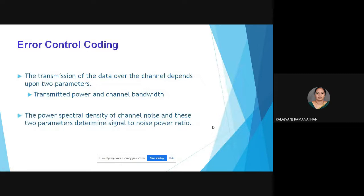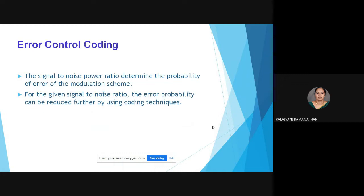Error control coding. The transmission of data over the channel depends upon two parameters: transmitted power and the channel bandwidth. The power spectral density of channel noise and these two parameters determine the signal-to-noise power ratio. The signal-to-noise power ratio determines the probability of error of the modulation scheme. For a given signal-to-noise ratio, the error probability can be reduced further by using coding techniques.